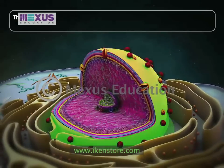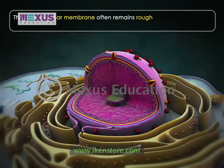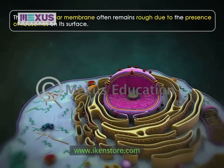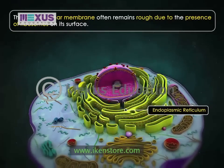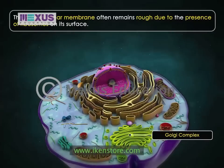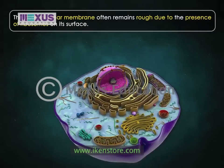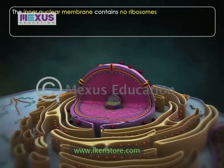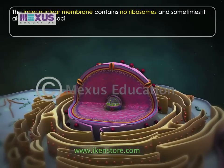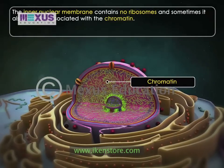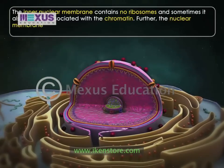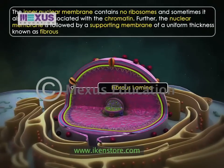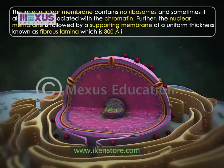The outer nuclear membrane often remains rough due to the presence of ribosomes on its surface. Sometimes it remains continuous with the membranes of the endoplasmic reticulum, Golgi complex, mitochondria, etc. The inner nuclear membrane contains no ribosomes and sometimes also remains associated with the chromatin. Further, the nuclear membrane is followed by a supporting membrane of uniform thickness known as fibrous lamina, which is 300 angstroms in thickness.